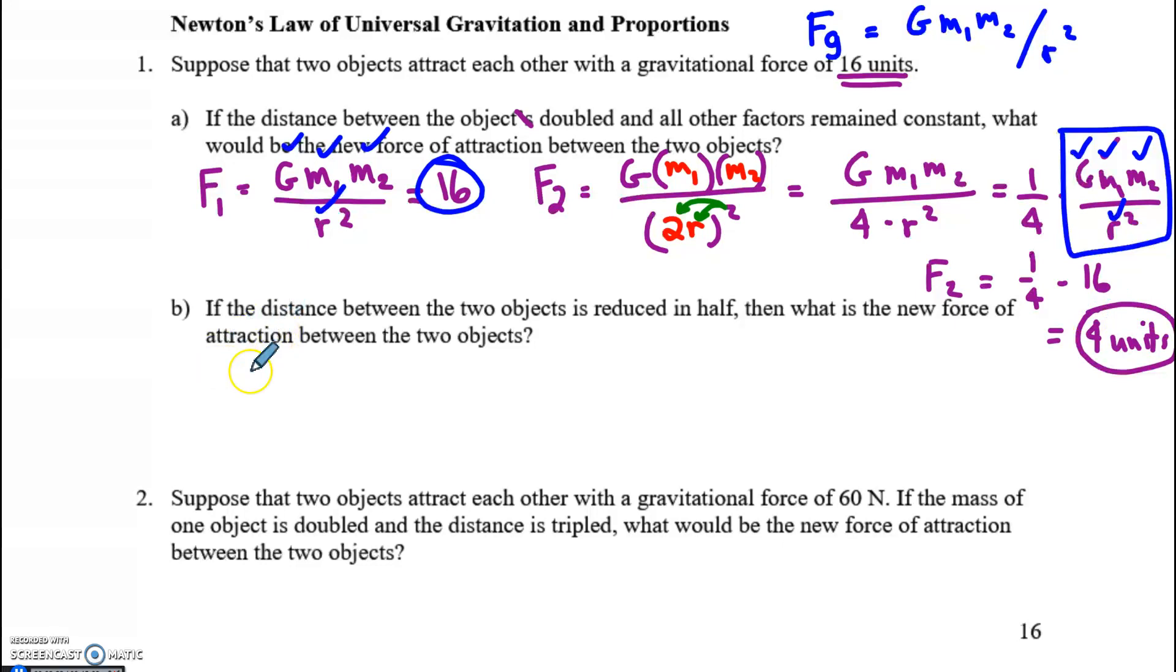Part B. If the distance between the objects is reduced in half, so I'm going from R and the new value is going to be R over 2, then what's the new force of attraction? The second force, the new force F2, I do G times the two masses over the distance squared. Well, M1 is staying the same. M2 is staying the same. And we have R over 2 now.